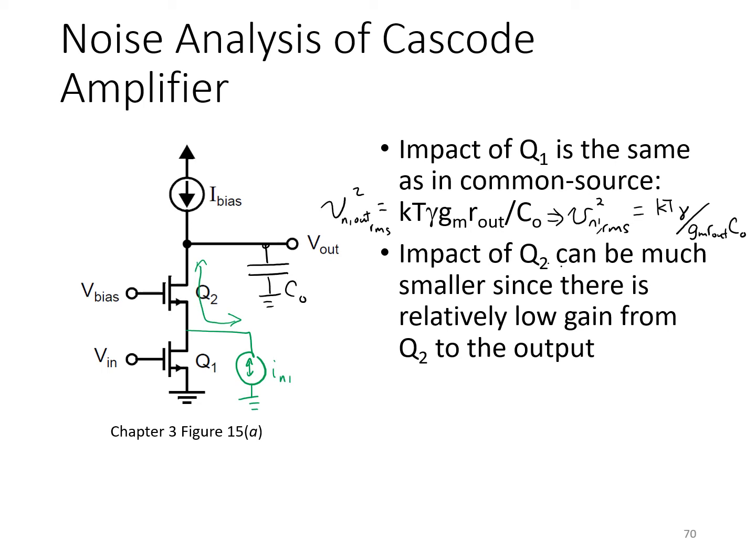We would see a very similar looking analysis for the noise contribution of Q1. Its output noise would be as shown here, VN1 out RMS squared. Therefore, the input-referred noise due to transistor Q1 squared would be, as before, KT gamma over GM Rout CO because we divide by the gain of the stage squared. Now second, let's consider the impact due to Q2. So Q2 is the cascode transistor biased in active mode.